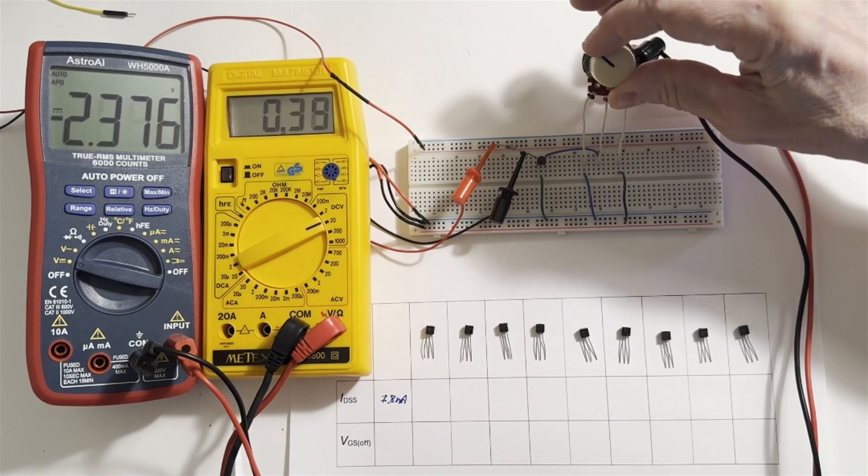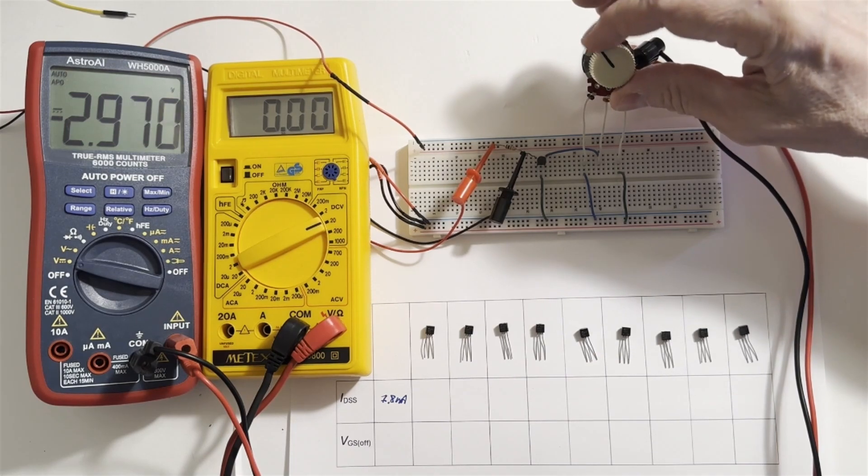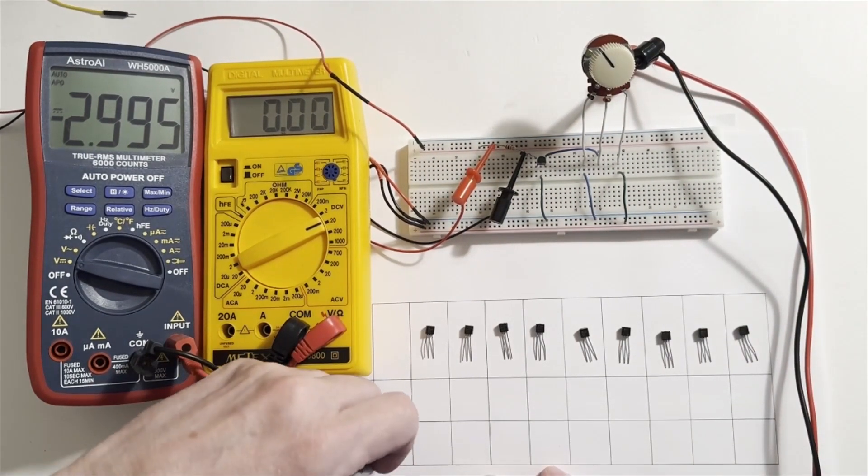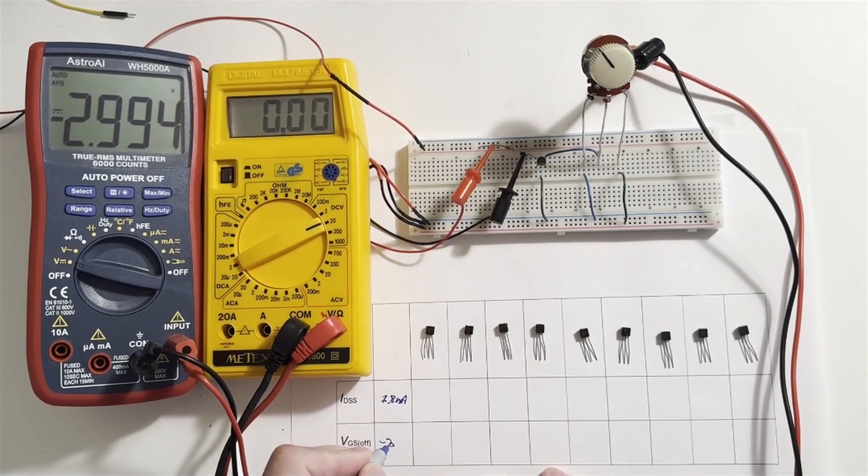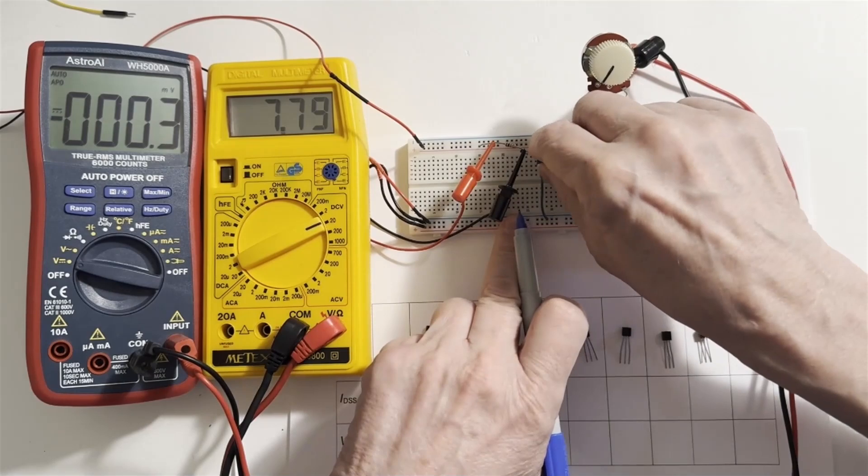So let's see. We're getting down there pretty good. We're down to, boy, there we go. Let's call that negative 3 volts. Okay. So our VGS-OFF for this first JFET is negative 3 volts. All right. We'll turn our bias voltage back to zero.